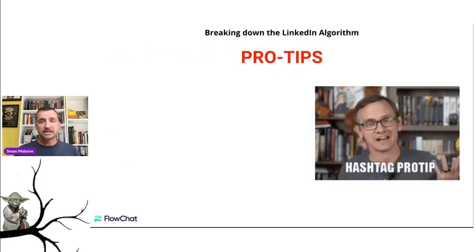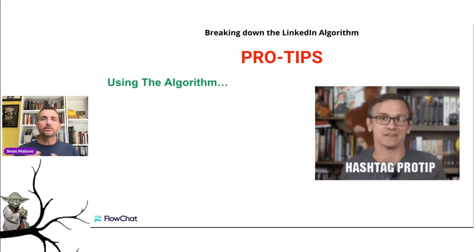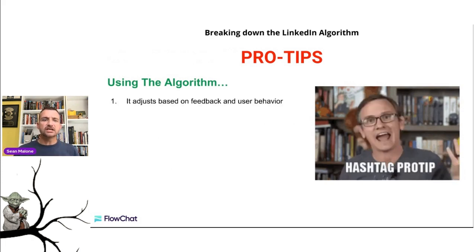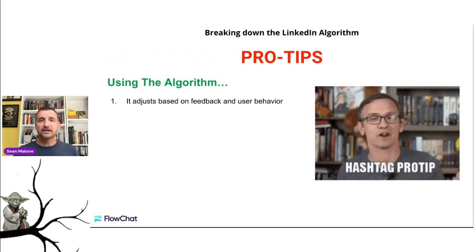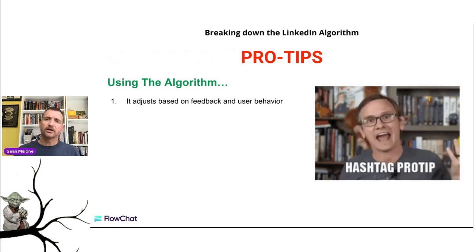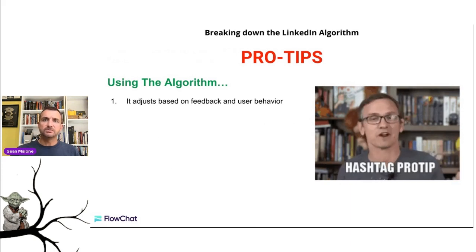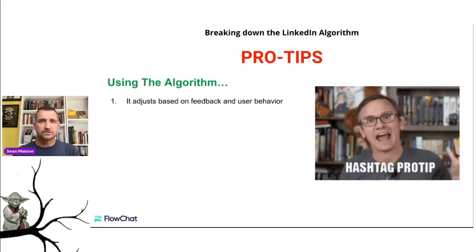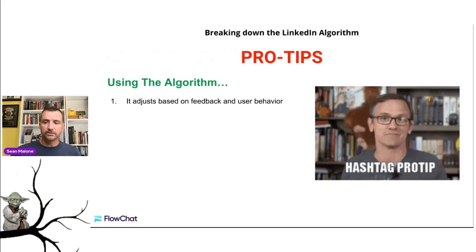Here are the pro tips. Number one: remember the algorithm adjusts based on feedback and user behavior. This algorithm is designed and powered by AI — algorithms have been using AI since the beginning. They're smart and they're watching what you're doing. If you make a post that's not relevant and someone says 'don't show this to me again,' the algorithm is going to throttle you a little bit.